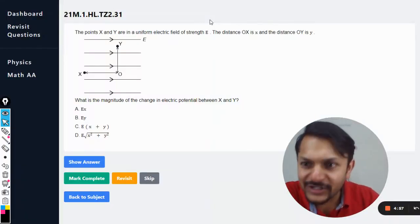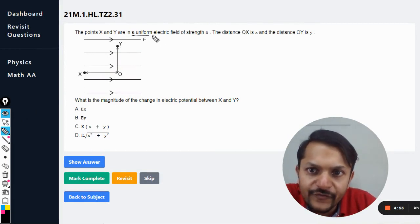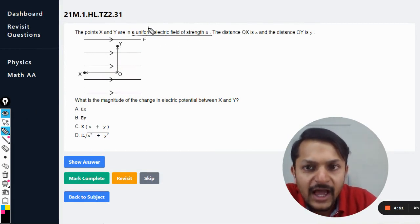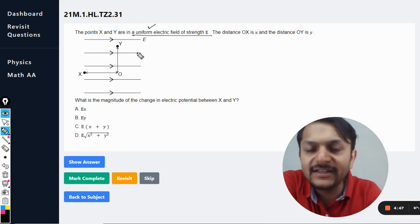Okay dear students, let us see what is there in this question. Now a point X and Y are in a uniform electric field of strength E, and how you can decide that whether it is actually uniform or not.